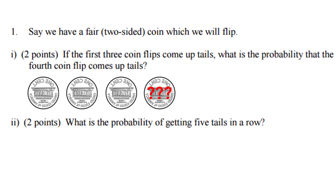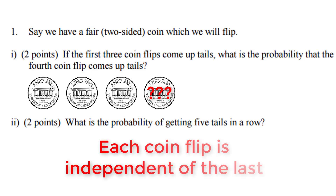The important thing to note here is that the coin is going to have independent trials. Each one of these coin flips will not be dependent on what it was previously. So although you've gotten tails three times in a row, you will not have this fourth flip influenced by the previous flips. So the probability of getting tails on your fourth flip is 50%.